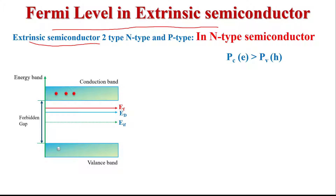I am not going into the detail of N-type or P-type semiconductor and the difference between them, because I have already discussed N-type and P-type semiconductor material in my previous videos. Now, Fermi level in N-type semiconductor material. To form N-type semiconductor material, we add a pentavalent impurity in the pure semiconductor material. That pentavalent impurity is called donor impurity.